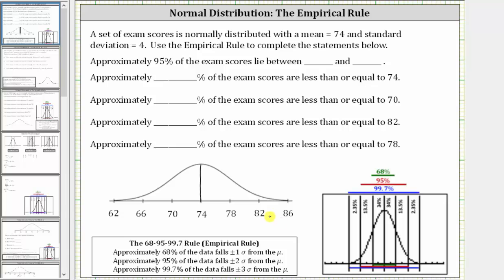The first statement is: approximately 95% of the exam scores lie between which two scores? For the empirical rule, approximately 95% of the data falls plus or minus two standard deviations from the mean. So for our data, notice how 82 is two standard deviations above the mean, and 66 is two standard deviations below the mean. Therefore, approximately 95%, represented by this area between the two scores, lie between 66 and 82.